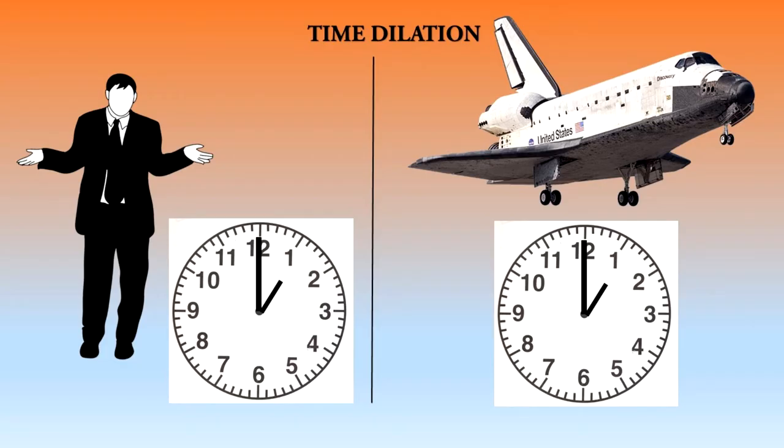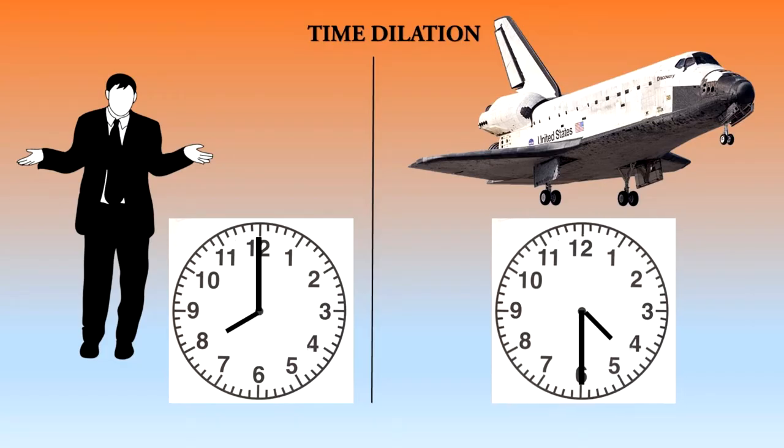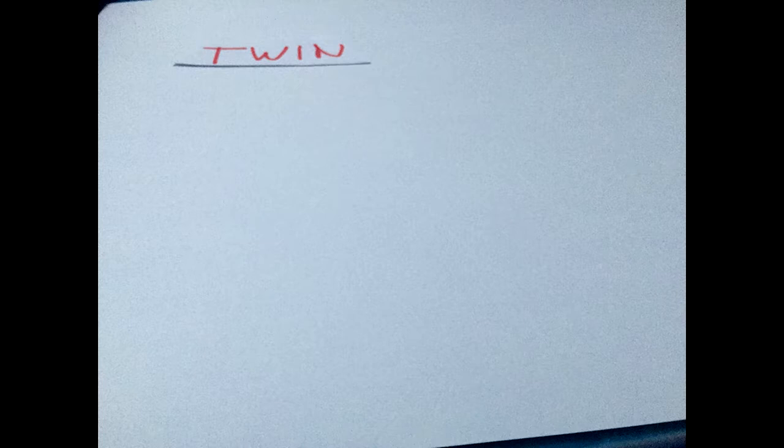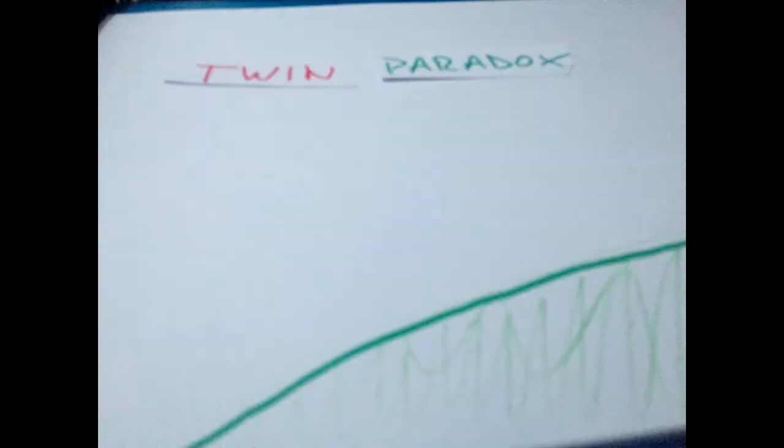An effect of this theory is time dilation. Basically, time passes slower and slower the faster you travel, or the closer you get to the speed of light.